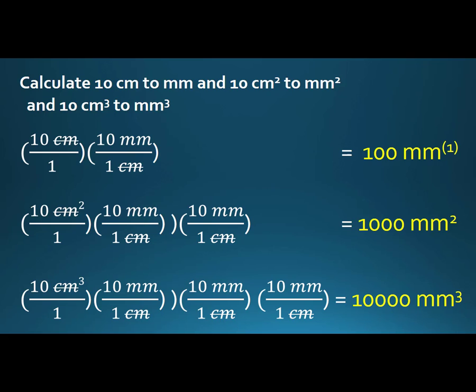For 10 centimeters squared, we don't do millimeters squared as we're doing a conversion; rather, we do one centimeter per 10 millimeters, one centimeter per 10 millimeters, and we get 1,000 millimeters squared.